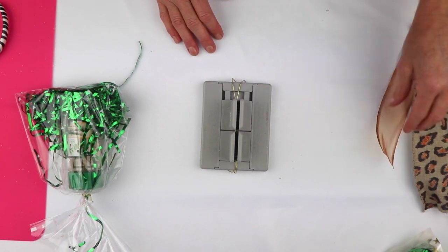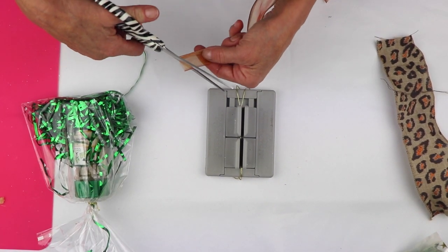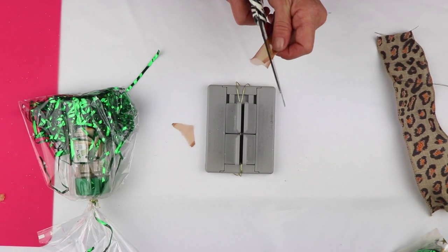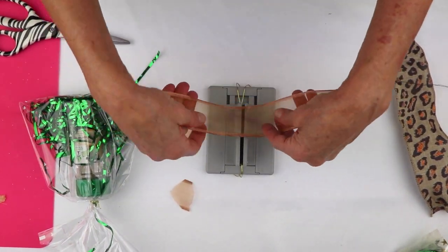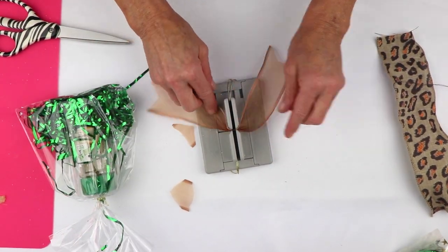And then what I'm going to do is take this sheer ribbon and I'm just going to dovetail the ends. Then I'm going to take this, fold it in half and put that right into the center of my mini Bowdabra.